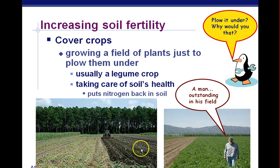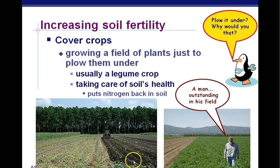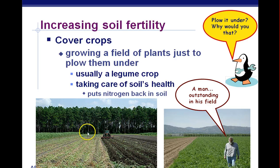When legumes fix nitrogen, they make it available for other plants. Farmers will plow the legumes back under into the dirt — not even harvesting the soybeans or peanuts — to return the nitrogen to the soil and regenerate it. Windbreaks are large rows of trees planted in fields in places like Kansas or Nebraska to slow down erosion; when wind comes through, the trees stop it and prevent topsoil loss.